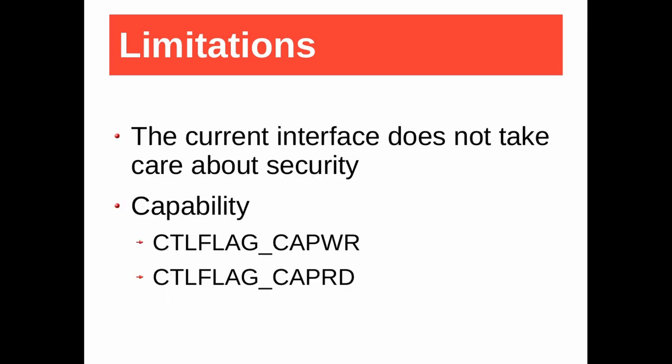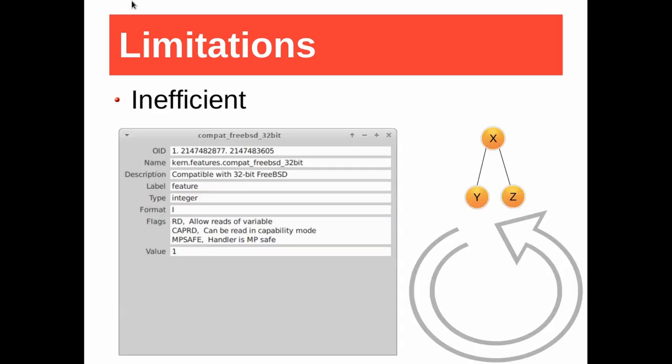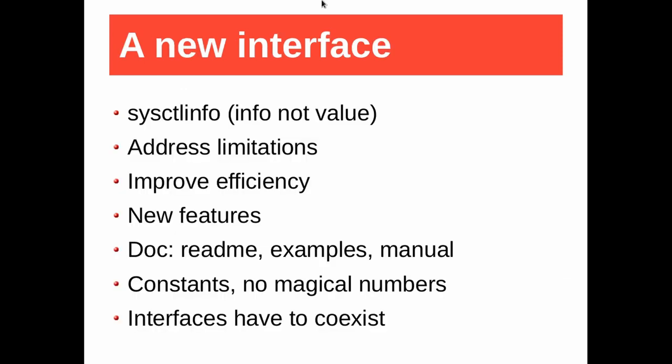The current interface does not check if an object has the CTL capability flags, so it returns every piece of information about a node — also in capability mode. Finally, the interface is quite inefficient: the kernel needs to find the same object many times to pass all its properties to userland.